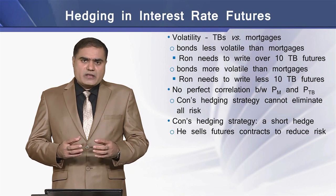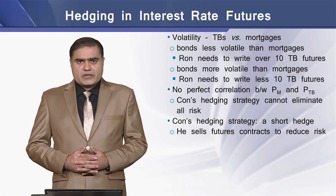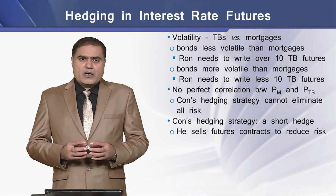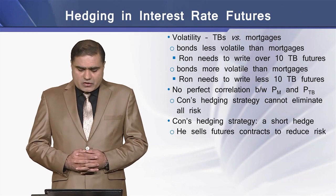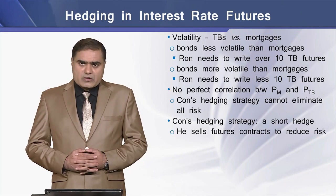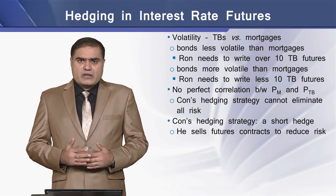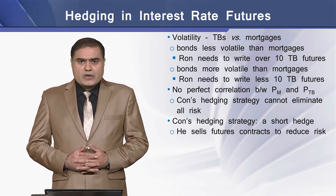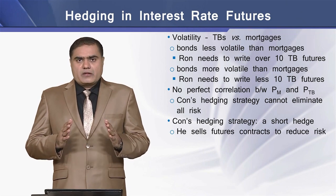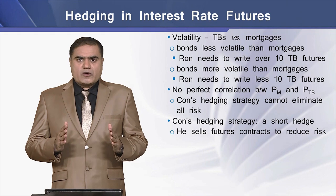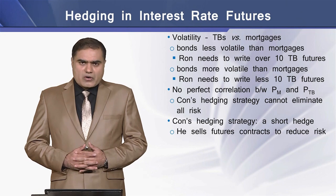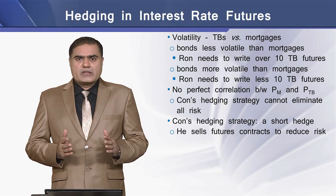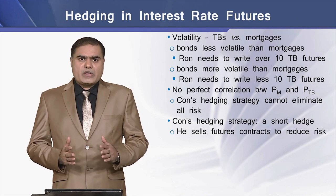Being non-identical financial instruments, there is no perfect correlation between the price movements of bond prices and mortgage prices. This means that Ron's hedging strategy cannot eliminate total risk in these financial instruments. Finally, the hedging strategy Ron is adopting in this case is the short hedge, because in a short hedge strategy, Ron is selling futures contracts to reduce his risk associated with the mortgage loans.